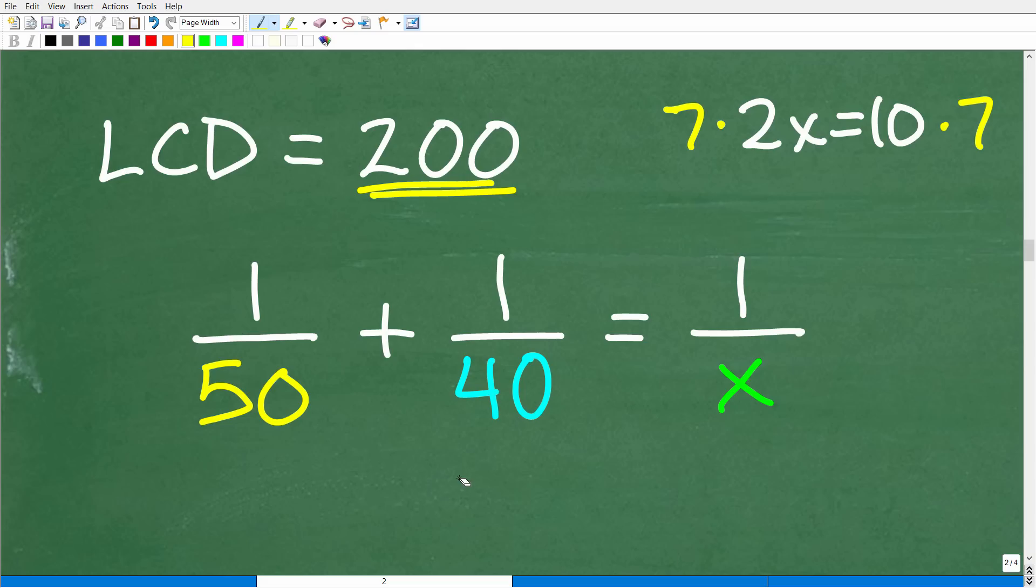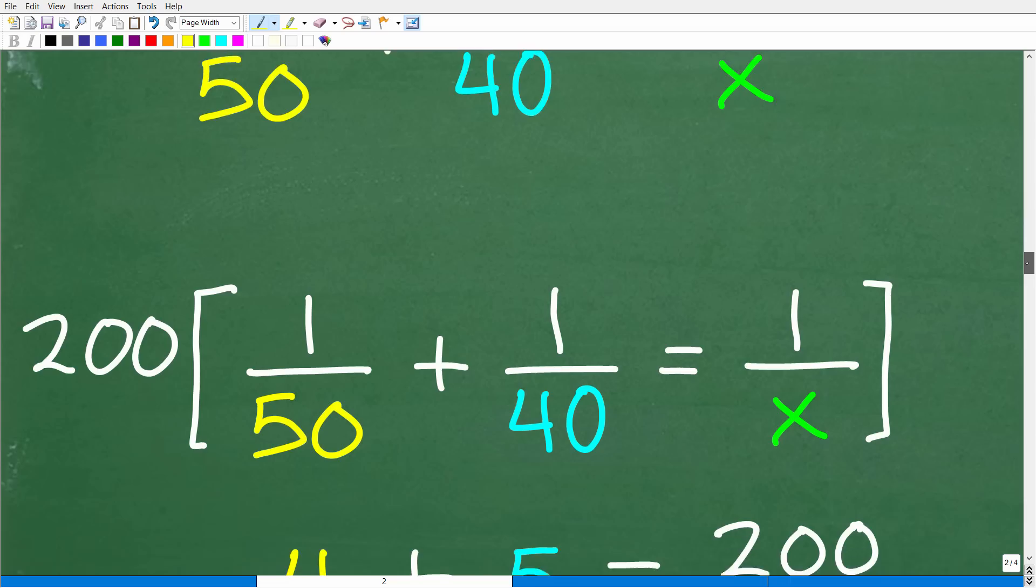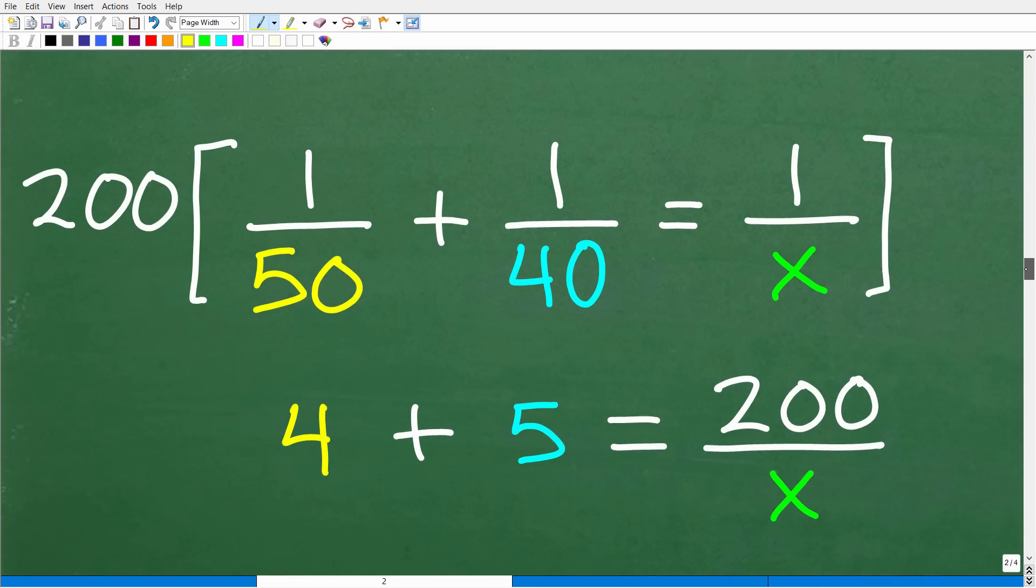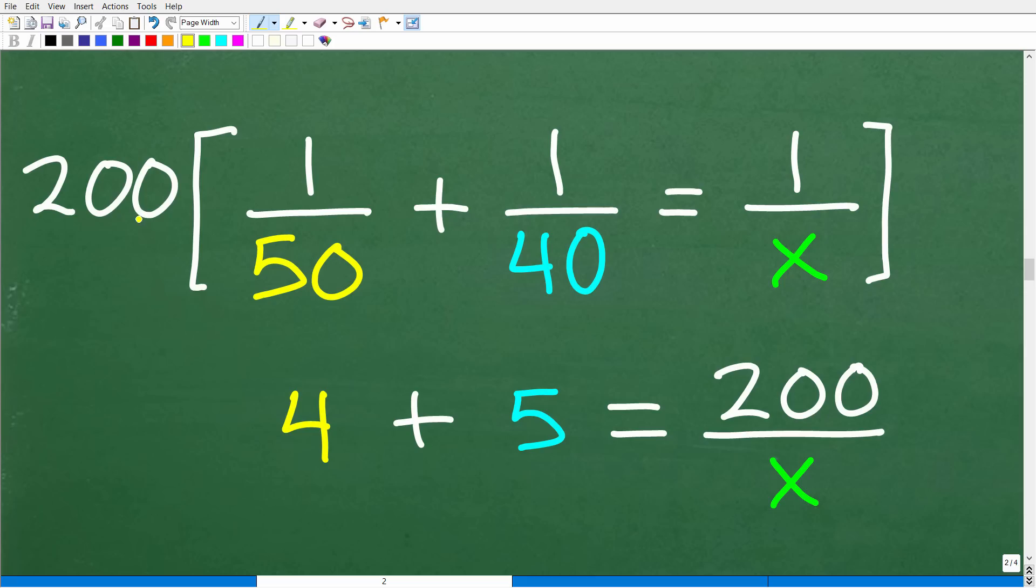So let's go ahead and multiply the entire equation by 200 to just kind of get rid of these fractions. Now another approach you could have taken is, well I could just add these fractions up. That's perfectly fine as well, but it's just another route to get to the same destination. So let's go ahead and do that. So I'm going to take this 200 and I'm going to multiply it by the entire equation, each term in the equation.